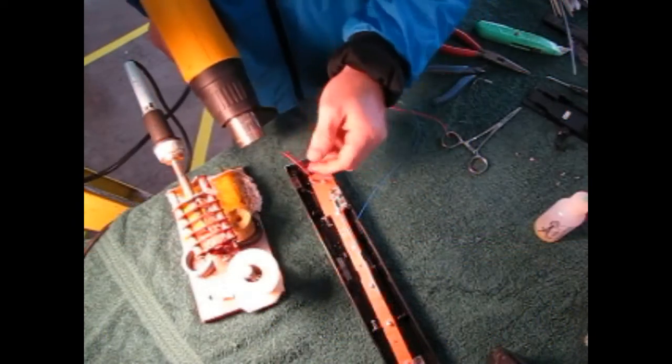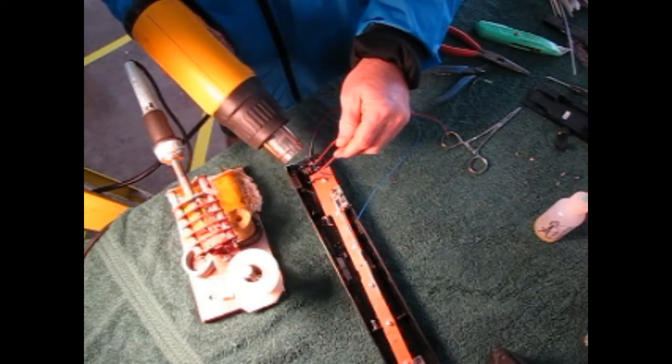Remember that heat shrink? Shrink it down over that exposed joint where you soldered the two wires together. You need to insulate it.